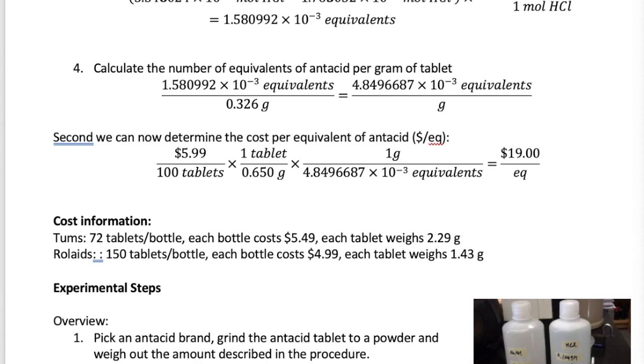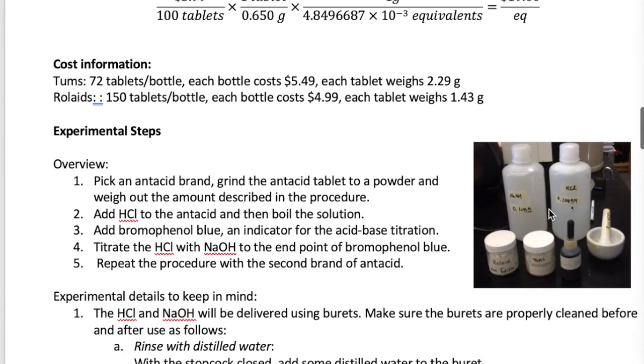So let's now go through the experimental step. On the right is a picture of the various components of the experiment. So you're going to start with the antacid, get one of the tablets and grind it with a mortar and pestle, which is shown here, and then you're going to weigh a certain amount of that antacid powder as described in your lab procedure. You're going to then dissolve the antacid in HCl, which comes in one of the reagent bottles shown here. Heat that solution, which helps to remove the CO2 that's forming from the reaction between the antacid and the HCl. And then to that hot solution, you're going to add bromophenol blue. This comes in a small vial, which is shown here.